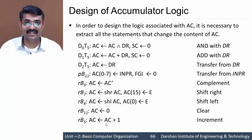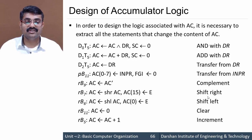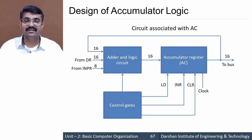After shift left, we have clear, which also affects the accumulator — the clear operation takes place. Then we have increment, which performs an increment operation on the accumulator. So the instructions affecting the accumulator are: AND, ADD, LDA, INPR, complement, shift right (CIR), shift left (CIL), clear, and increment accumulator.